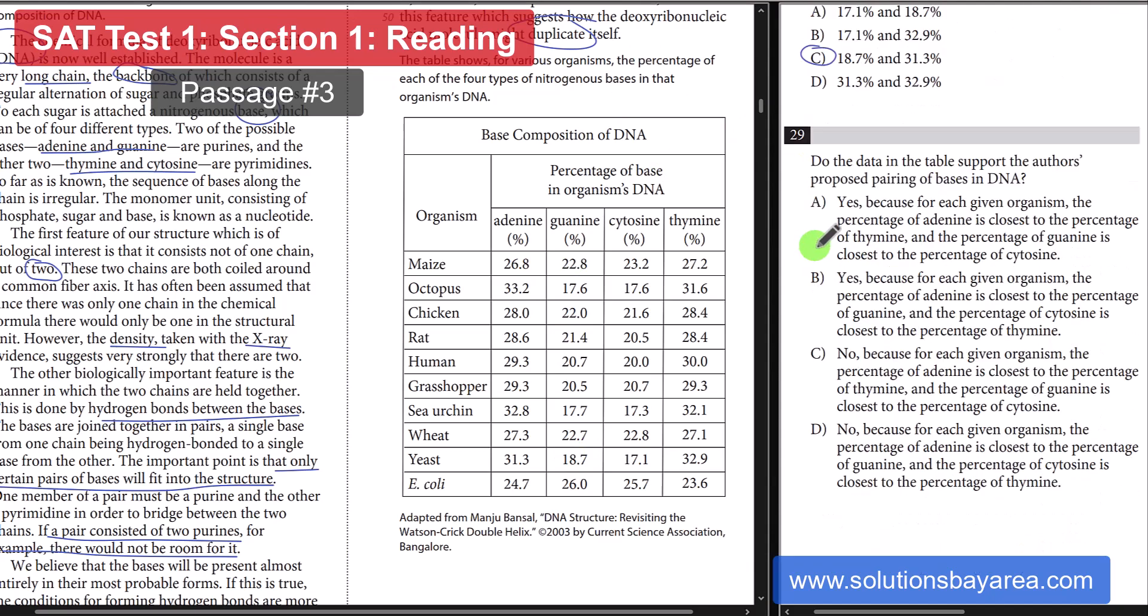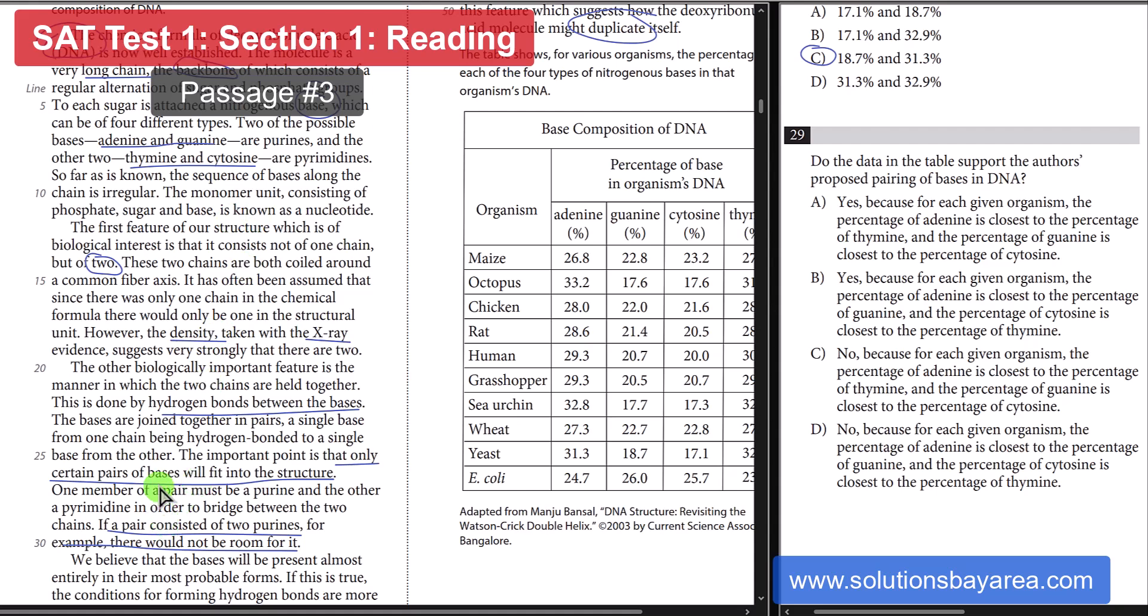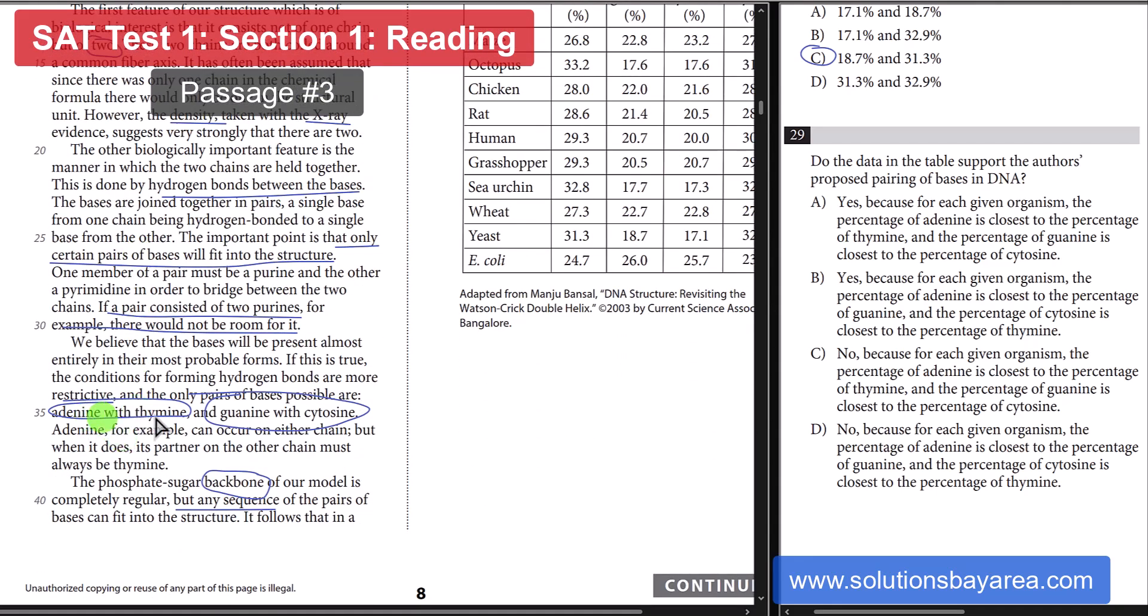Number 29. Do the data and tables support the author's proposed pairing of bases and DNA? Well, if you look at this, adenine and thymine percentage is about the same. Guanine and cytosine percentage is about the same. And that's exactly what they're talking about here where they said that the pairing is very specific. Adenine with thymine. Guanine with cytosine. So, the answer is going to be yes. It is A.